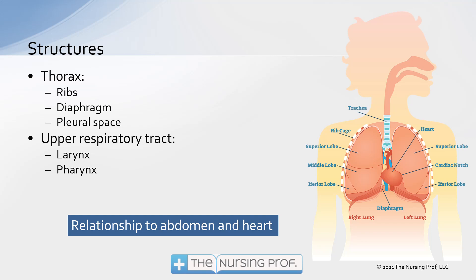The upper respiratory tract includes the larynx and the pharynx, so we see that in our picture up there at the top, the upper part of the respiratory tract. Obviously, these pieces have to be intact in order to have adequate respiration.